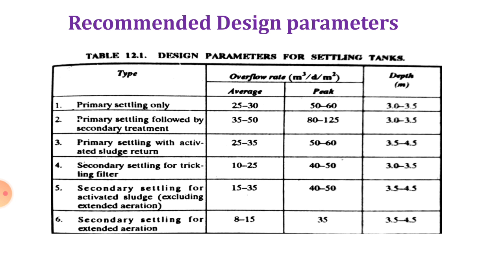These are some design recommendations or parameters to follow for the different types of settling. For primary settling, the overflow rate should be between 25 to 30 m³/day/m² for average and 50 to 60 for peak, and depth should be between 3 to 3.5 meters. As the type of settling changes, the overflow rate and depth vary accordingly. You have to refer to these parameters while designing the sedimentation tank as the case may be.